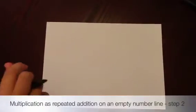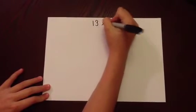Multiplication as repeated addition on an empty number line. Step 2. In this multiplication sum, we are going to be multiplying a two-digit number by a single digit.